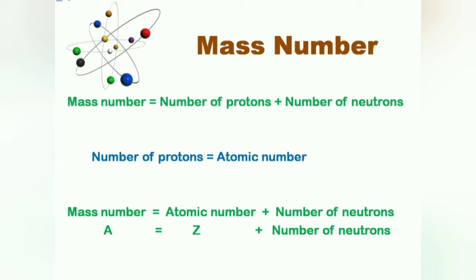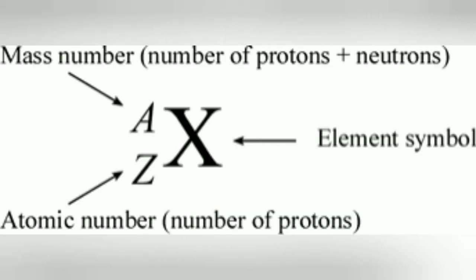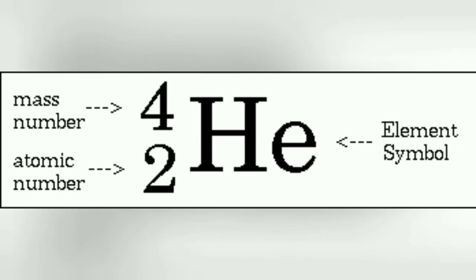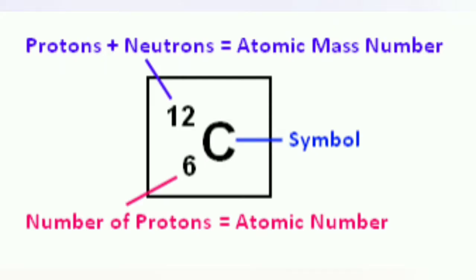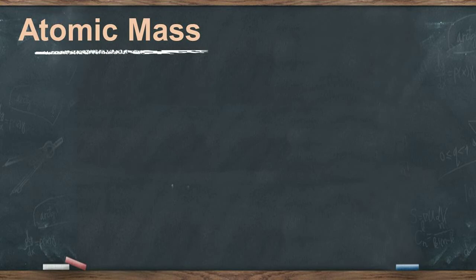The mass number and atomic number can be indicated on the symbol of an element. The atomic number is written as a subscript on the lower left side of the symbol, whereas the mass number is written as a superscript on the upper left side. For example, the atomic number of helium is 2 and its mass number is 4, represented as shown. Also, the mass number of carbon is 12 and its atomic number is 6, represented as shown.